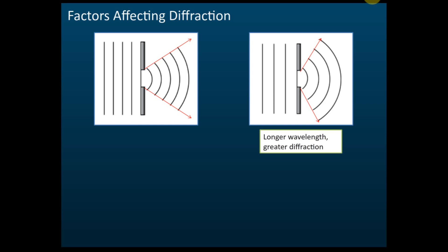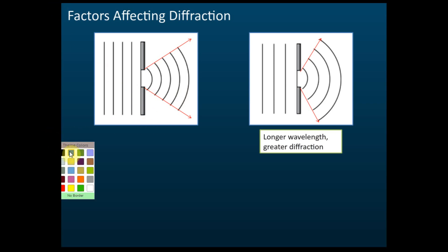Factors affecting diffraction — what makes a wave diffracted more or less. The size of the opening is the same in both cases, but the wavelength is different. In the first case, the wavelength (lambda) is shorter, and in the second case, the wavelength is bigger.